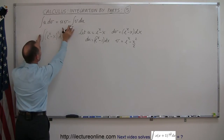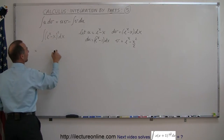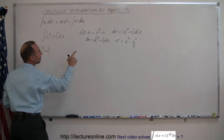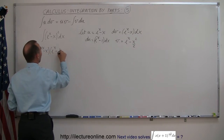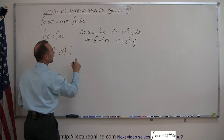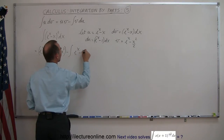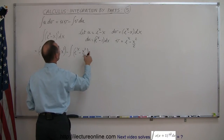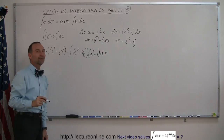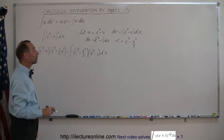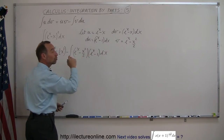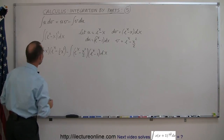We can now say that the integral is equal to uv minus the integral of v du. So u is e to the x minus x, and v is e to the x minus one half x squared. At first sight it may not look like you've simplified things, but actually you have, because you can multiply these out. You'll end up with four terms, and you can integrate each term separately.